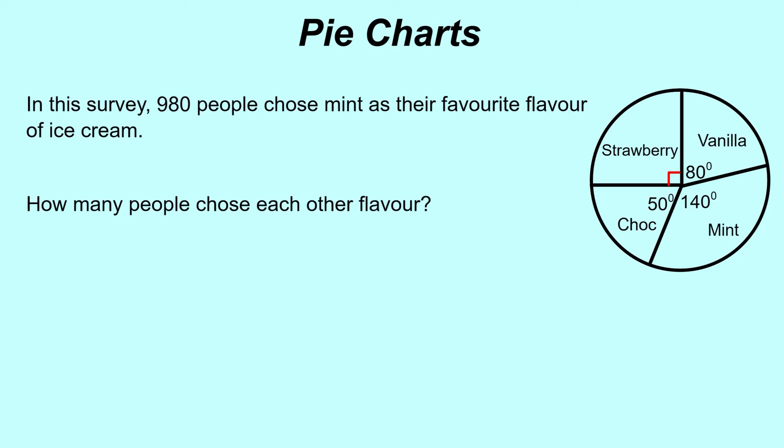If we've got 980 people choosing mint, then what we want to do is scale that down. We get 980, we're going to divide that by 140 because that's the angle that is represented by mint in the pie chart. If we do 980 divided by 140, what that gives us is basically what does one degree of the pie chart represent. 980 divided by 140 tells us that one degree of the pie chart represents seven people. There's lots of different ways you can go about this. I would probably just stick to one method.